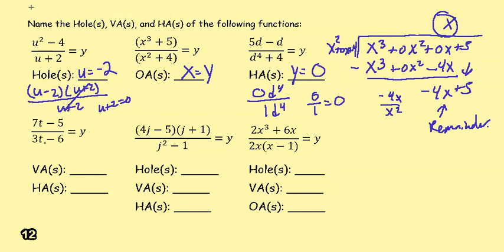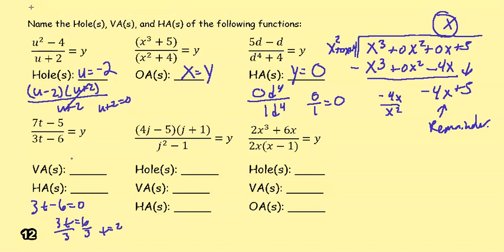For y = (7t - 5) / (3t - 6), nothing cancels out so there are no holes. Setting the denominator equal to zero gives t = 2, so there is a vertical asymptote at t = 2. Taking the leading terms, they have the same degree, so the horizontal asymptote is y = 7/3.